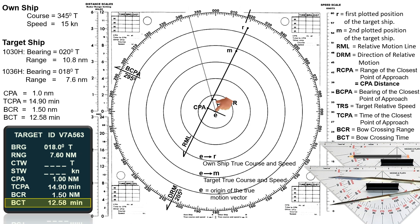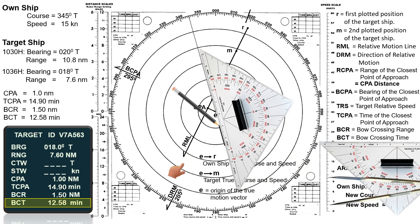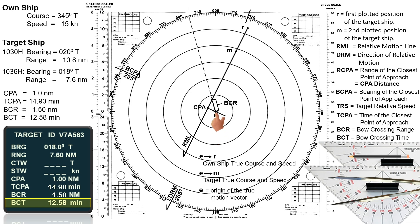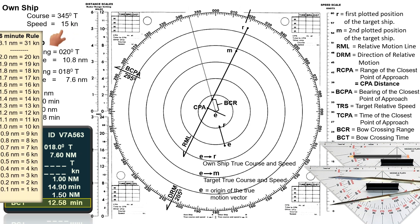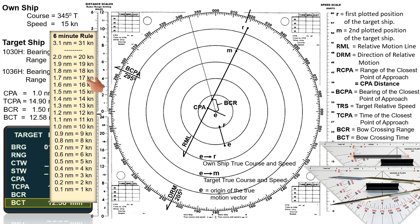I will draw a line that represents own ship's vector. The direction of the line is 345 degrees — that is own ship's true course. Let's mark the beginning of the line as point E, which is the own ship position. Point R is somewhere above E. To find point R, use own ship's true speed.